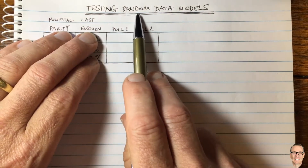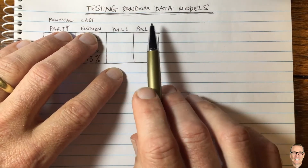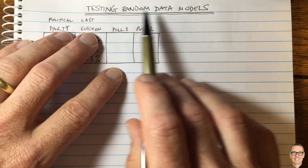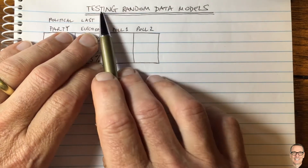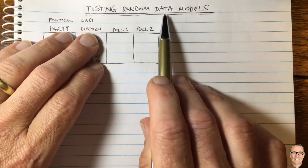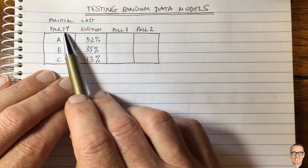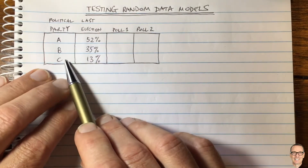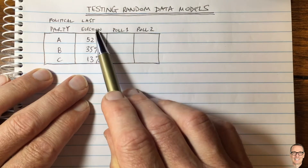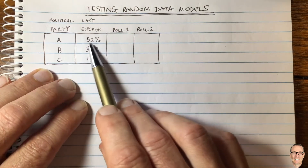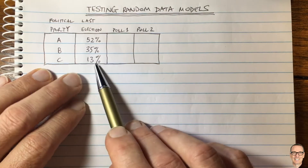How do we test random data models? This comes up all the time in big data and data processing where you have some random data, you might have a model for the data, and you want to test if that model matches the data. Here's one example: let's look at political parties A, B, and C. We have a country with three political parties, and at the last election party A got 52% of the vote, party B 35%, and party C 13%.